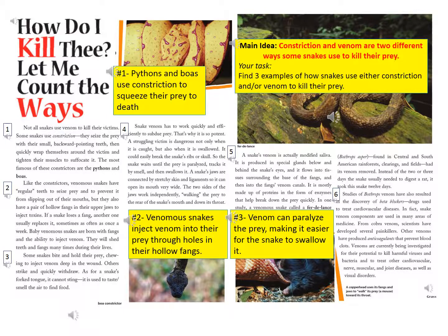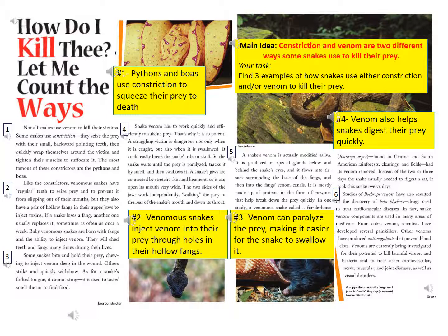Paragraph 5: A snake's venom is actually modified saliva. It is produced in special glands below and behind the snake's eyes, and it flows into the fangs' venom canals. It is mostly made up of proteins in the form of enzymes that help break down the prey quickly. In one study, a venomous snake called Fertilance, Bothrops asper, found in Central and South American rainforests, clearings, and fields, had its venom removed. Instead of the two or three days it usually needed to digest a rat, it took this snake twelve days. After re-reading paragraph 5, I found that venom also helps snakes digest their prey quickly — that's another way venom helps snakes.